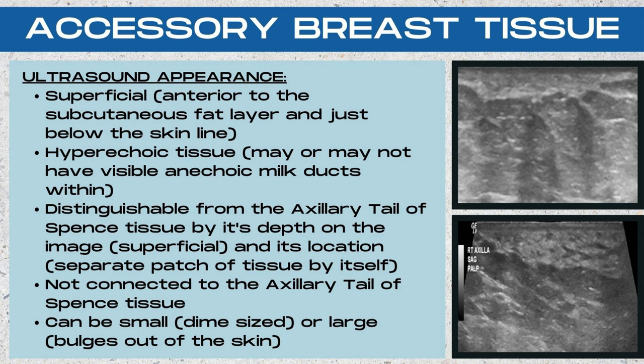Accessory breast tissue can be very variable in size. It can be as small as a dime — I've seen it as small as a pea — or it can be quite large where it actually bulges out of the skin.